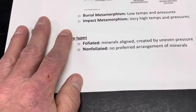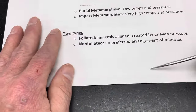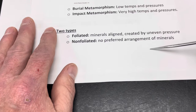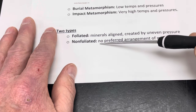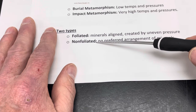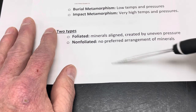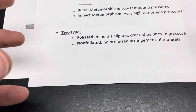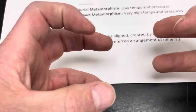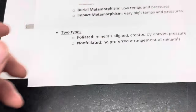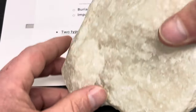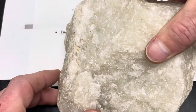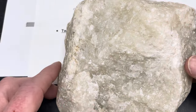What we also sometimes see, though, if we don't see a preferred arrangement of minerals, that's just called a non-foliated rock. The rock may be squeezed and the crystals are kind of dense, but we don't see a preferred orientation of the minerals.